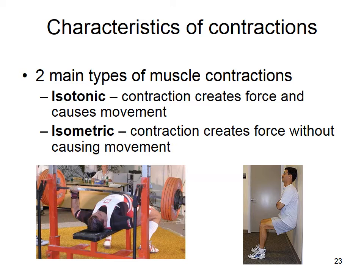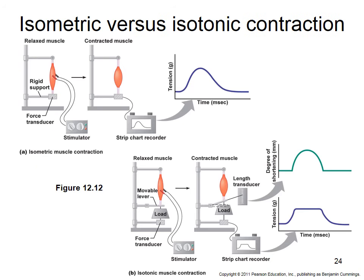There are two main types of contraction. Isotonic — you can actually move something. Isometric — contraction creates force without movement. If someone is capable of moving a giant weight, they're doing isotonic contraction. When doing wall sits, you're doing isometric contraction.